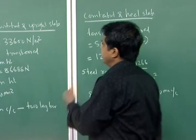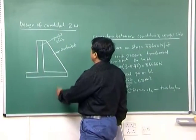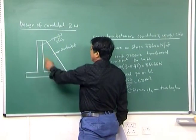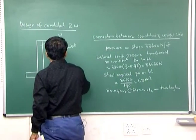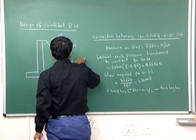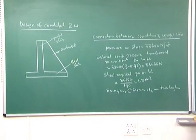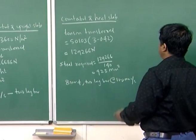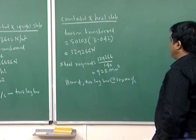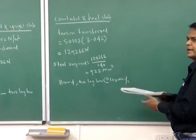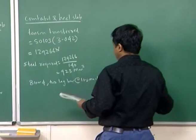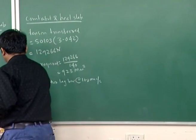Once the structural design is over, the counter fort is connected to the upright slab using tie bars of 8 mm phi at 80 mm center to center (2-leg). Similarly, for the counter fort and heel slab connection: 8 mm phi bars at 100 mm center to center, also 2-leg bars. Now let's draw how this looks.